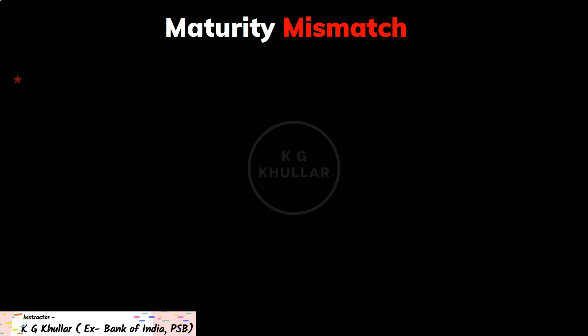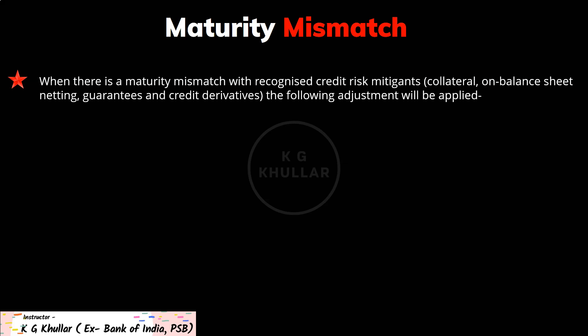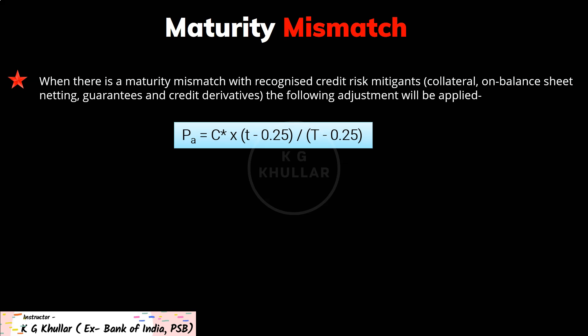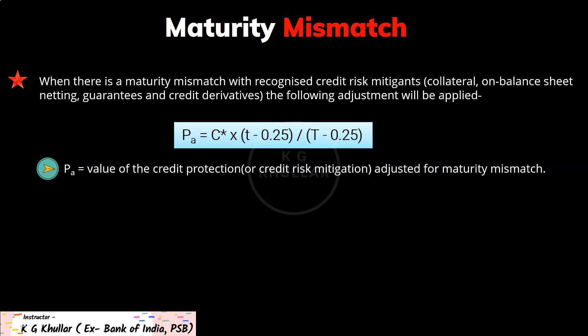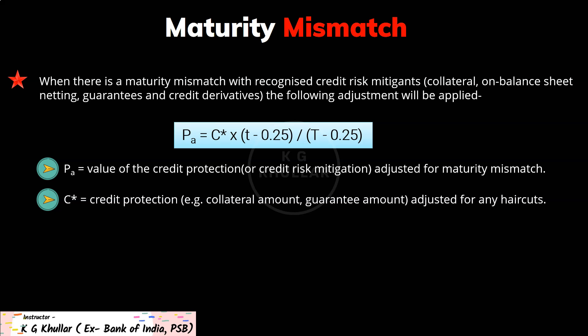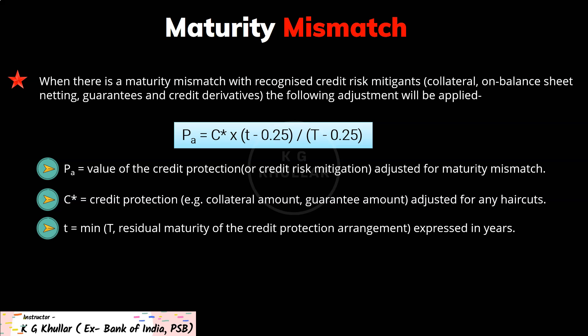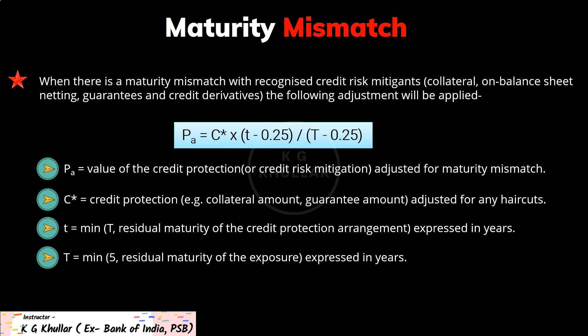For the treatment of transactions where there is a mismatch between the maturity of counterparty exposure and the collateral: when there is a maturity mismatch with recognized credit risk mitigants — i.e. collateral, on-balance-sheet netting, guarantees and credit derivatives — the following adjustment is applied: PA = C* × (t − 0.25) / (T − 0.25). Here PA is the value of credit protection adjusted for maturity mismatch. C* is the credit protection amount (e.g. collateral or guarantee amount) adjusted for any haircuts. Small t is the minimum of capital T and the residual maturity of the credit protection arrangement expressed in years. Capital T is the minimum of 5 and the residual maturity of the exposure, also expressed in years.